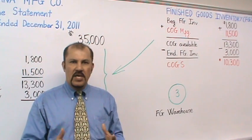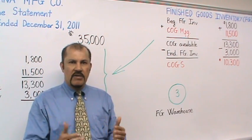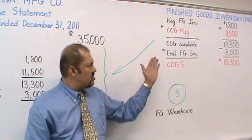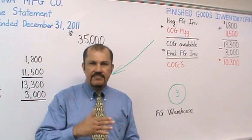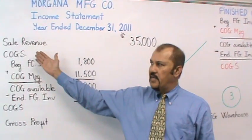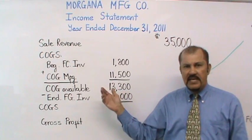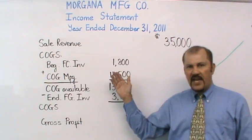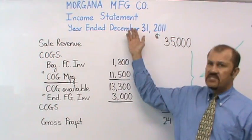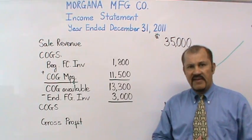Continuing with that discussion, I want to show you in this lecture where does this fit into the financial statement. Specifically, if you look at the illustration here, this is an illustration of our company, Morgana Manufacturing, and this is a partial income statement for the year ended December 31st, 2011.